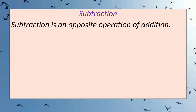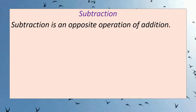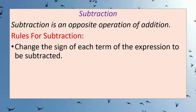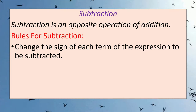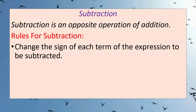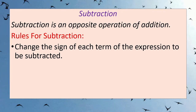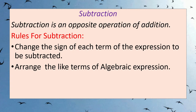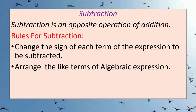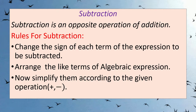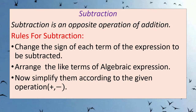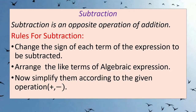Let's discuss subtraction. Subtraction is an opposite operation of addition. Here are some rules for subtraction. First rule: change the sign of each term of the expression to be subtracted. Terms with positive signs become negative and terms with negative signs become positive. Next step: arrange the like terms of the algebraic expression. After changing signs, write the like terms together. Then simplify — add the terms that are being added and subtract those that are being subtracted.